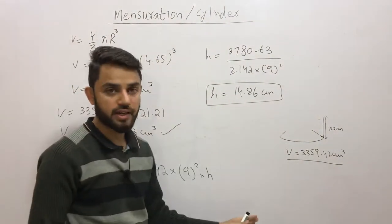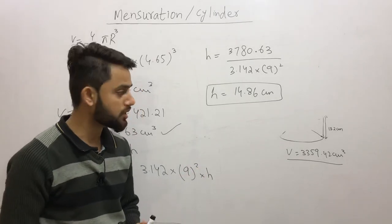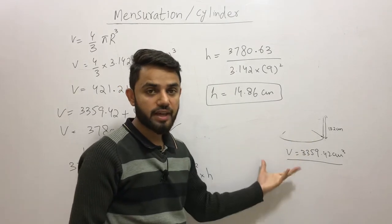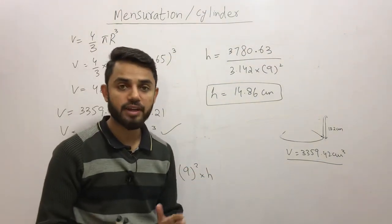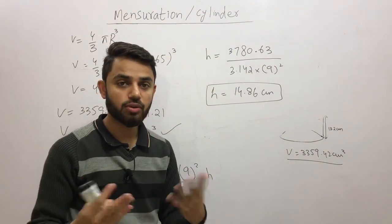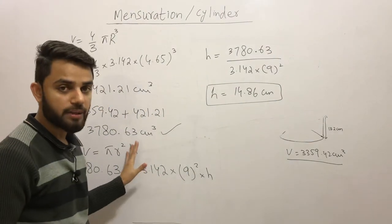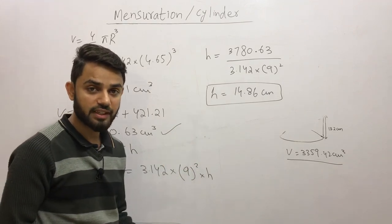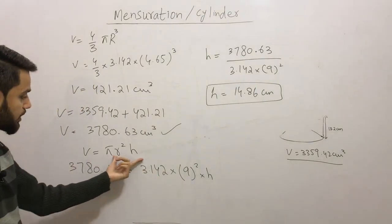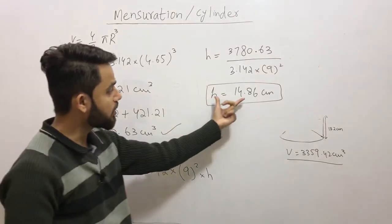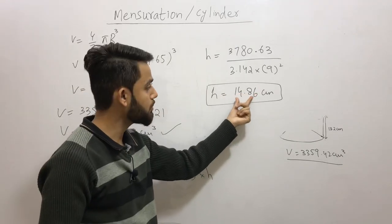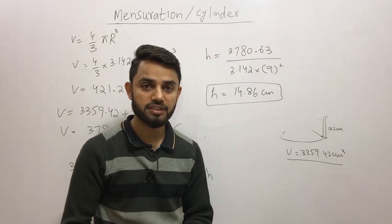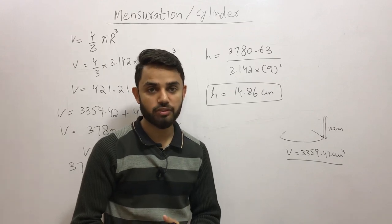Let me give a quick conclusion. We first found the volume of water in the cylindrical tin using the initial height. Then we found the volume of the spherical ball bearing and added them together to get the total volume. Using the cylinder formula πr²h with the unknown height, we got the new water height of 14.86 centimeters. I hope this video was helpful — please subscribe and share with your friends.